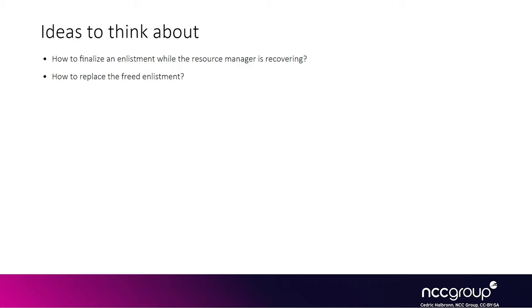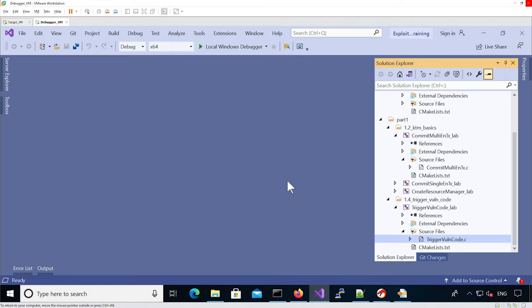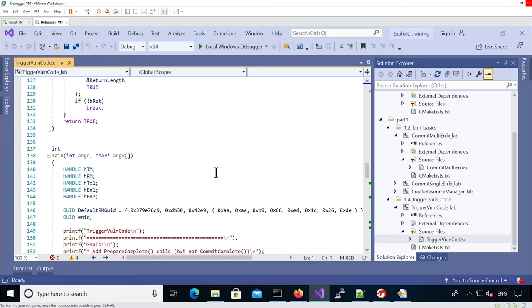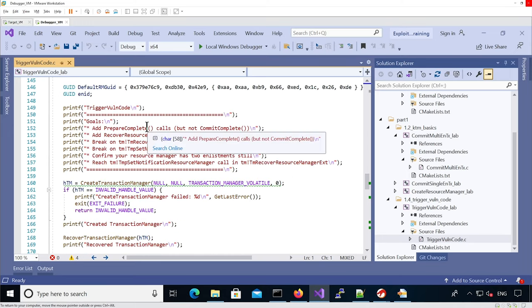While stepping through and understanding the code, it's good to keep future goals in mind. We'll need to be able to finalize an enlistment while it's in the recovery loop — at some point we'll have to free one enlistment so a stale pointer is used and we trigger a use-after-free. The second problem to solve is how to replace the memory that was previously a KEnlistment with controlled data to abuse the use-after-free. In Visual Studio, open trigger_vuln_code.c — it's very similar to the previous commit_multi_enlistment_tx lab. Add calls to PrepareComplete for both enlistments and add a call to RecoverResourceManager, then break on the two functions.